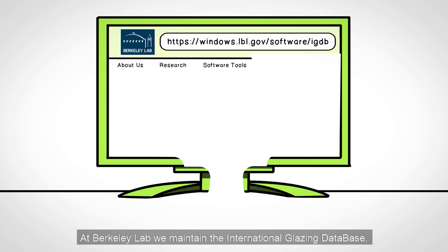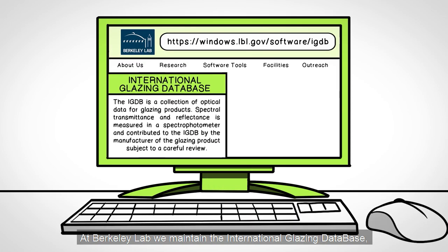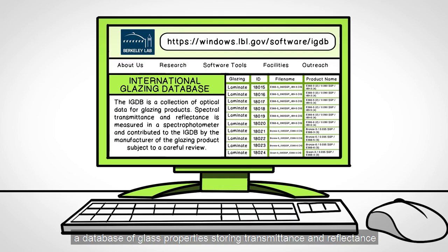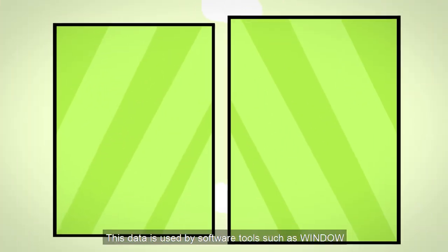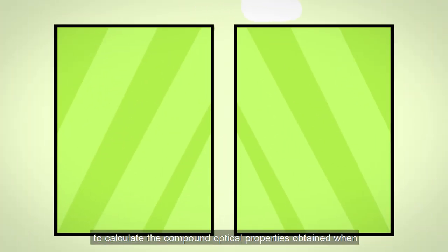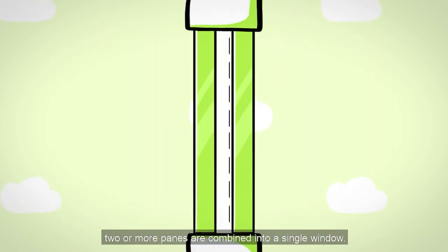At Berkeley Lab, we maintain the International Glazing Database, a database of glass properties storing transmittance and reflectance as a function of wavelength for more than 5,000 glass products. This data is used by software tools such as Window to calculate the compound optical properties obtained when two or more panes are combined into a single window.